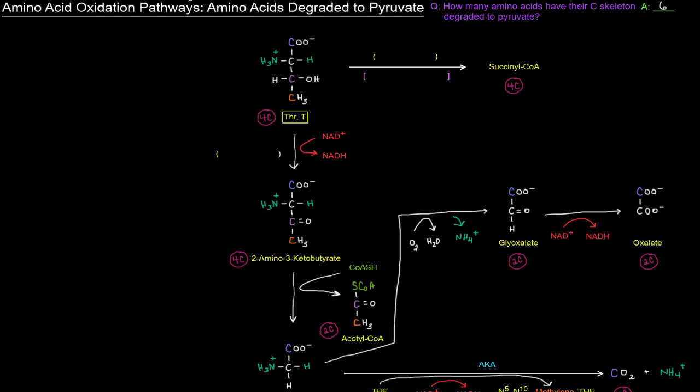So threonine actually, the major pathway by which it's degraded yields succinyl-CoA. And that's something we'll see in another video. But here in the minor pathway, via threonine dehydrogenase, the threonine can be converted into 2-amino-3-ketobutyrate, where we're basically just oxidizing this carbon right here, the purple one there, to the carbonyl. In that process, we make an NADH. So we get this 2-amino-3-ketobutyrate.